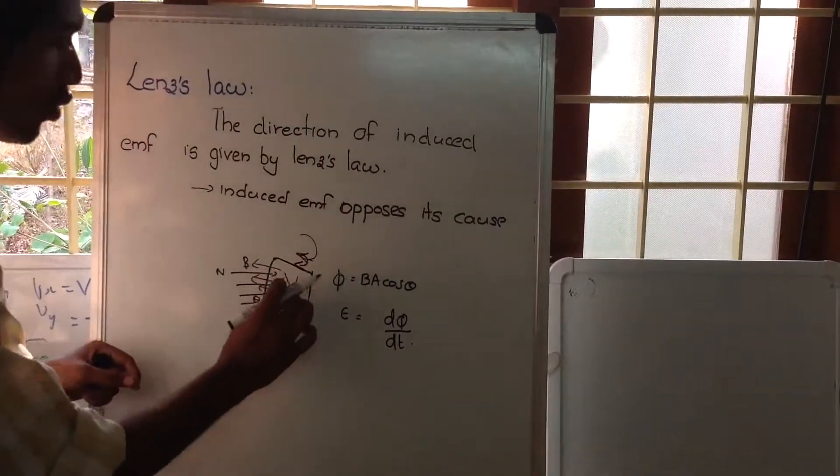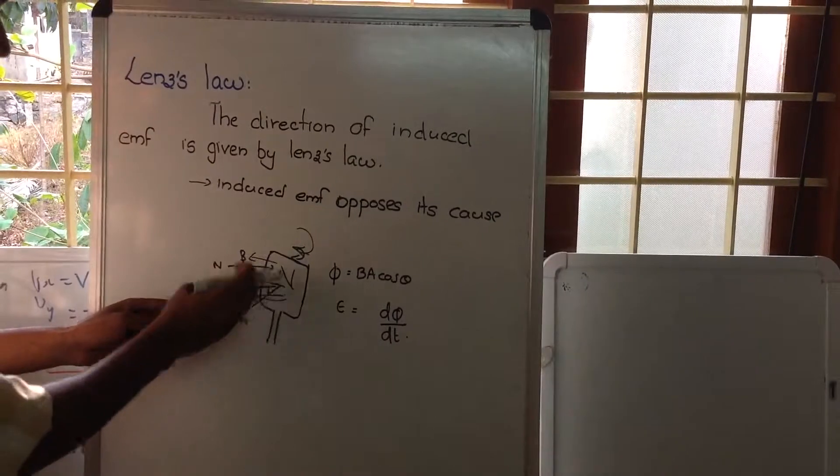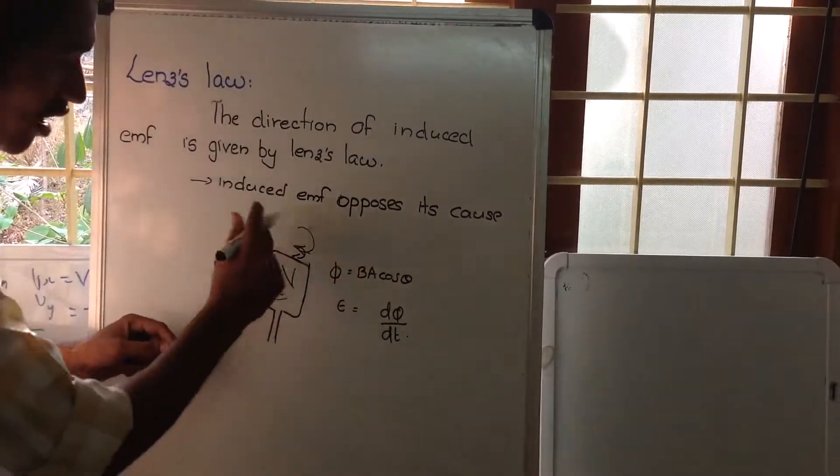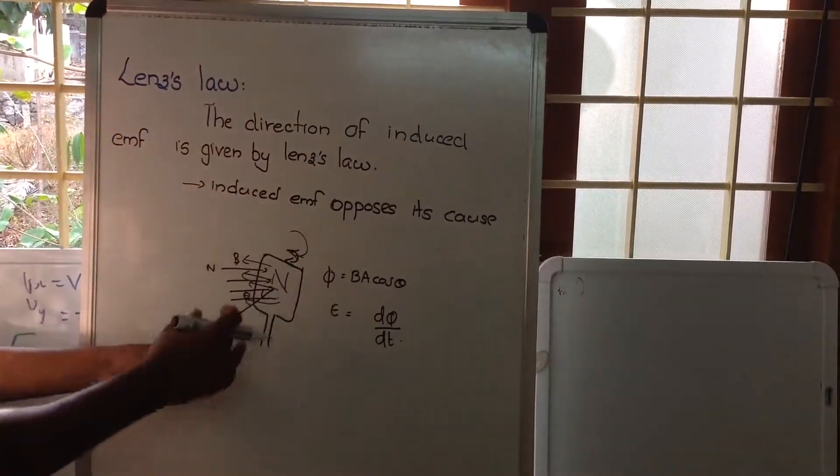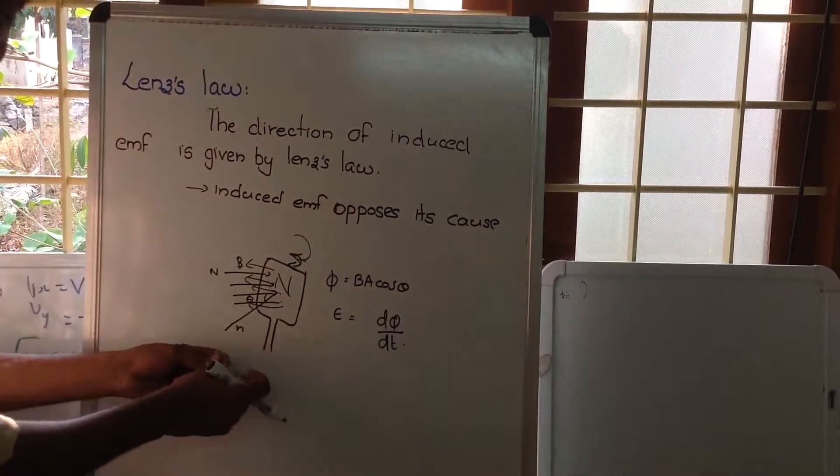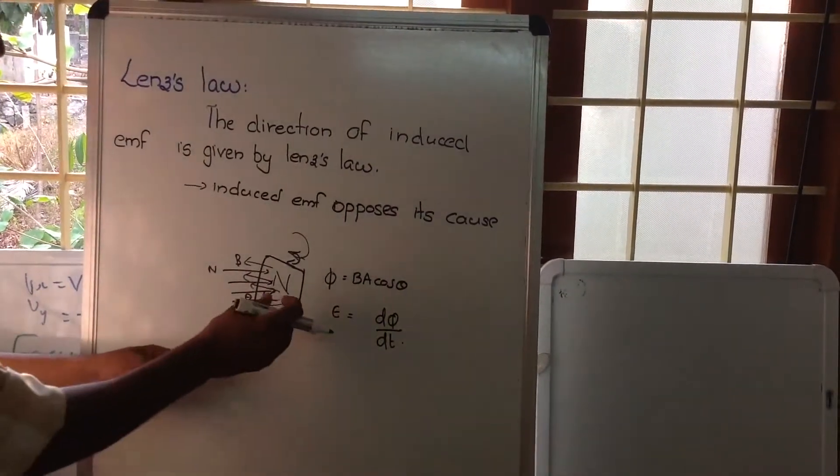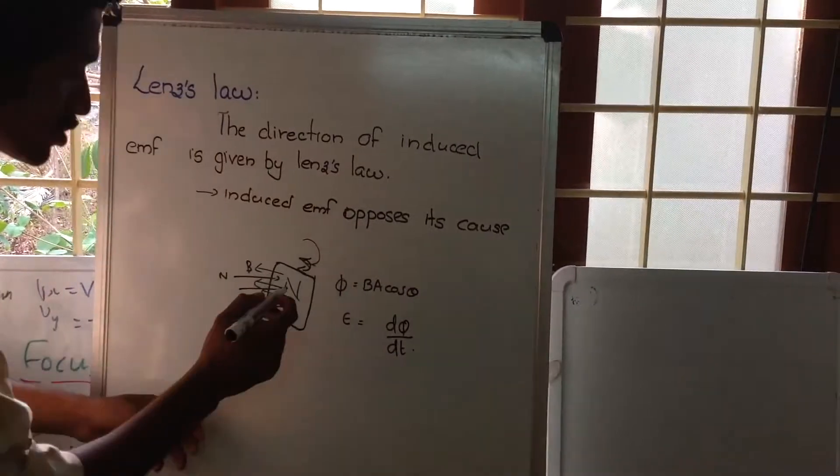So, if it is to oppose this magnetic field, then the current running here will be in such a way that the EMF created should be opposing the cause.